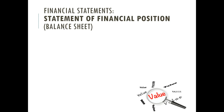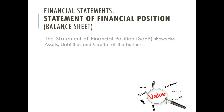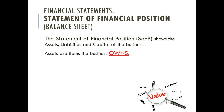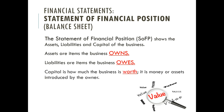The other part of the financial statements is the statement of financial position, also known as the balance sheet. It shows the assets, liabilities, and capital of the business, and overall it shows the net worth of the business. Assets are items that the business owns and uses in the business, whereas liabilities are amounts that the business owes to other people. Capital is the difference between the assets and the liabilities, and is usually made up of money introduced by the owner.